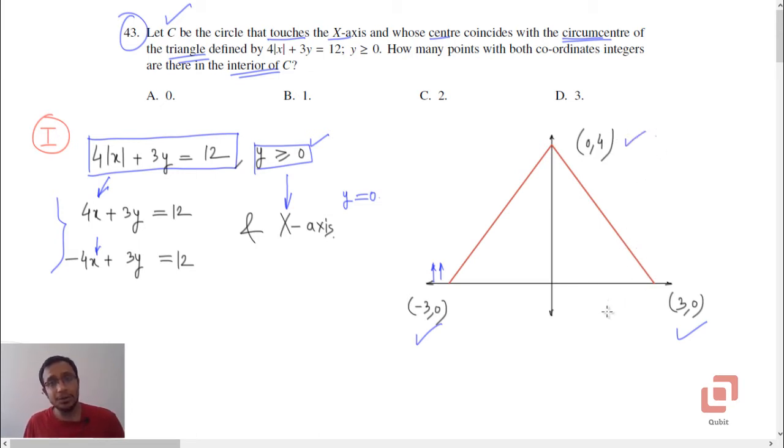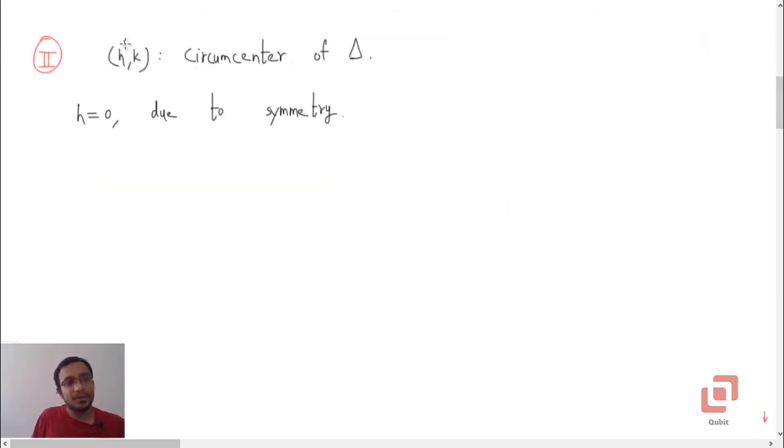Now due to symmetry, this is an isosceles triangle with the red sides being the equal sides. So we can very easily guess that its circumcenter will be somewhere on the y-axis, so its x-coordinate will automatically become 0. Now let us determine its y-coordinate. So suppose h, k is the circumcenter of the triangle and h will clearly be equal to 0 due to symmetry.